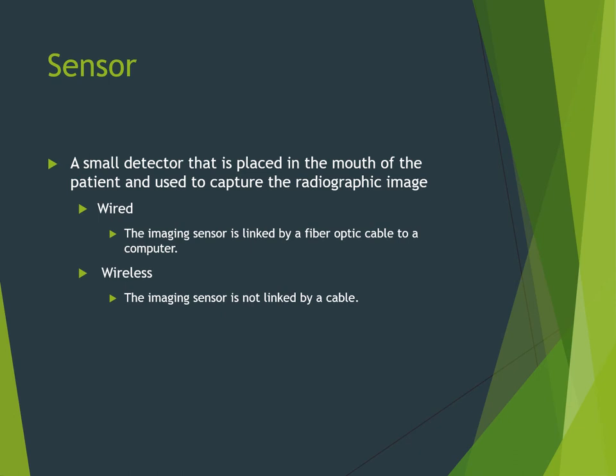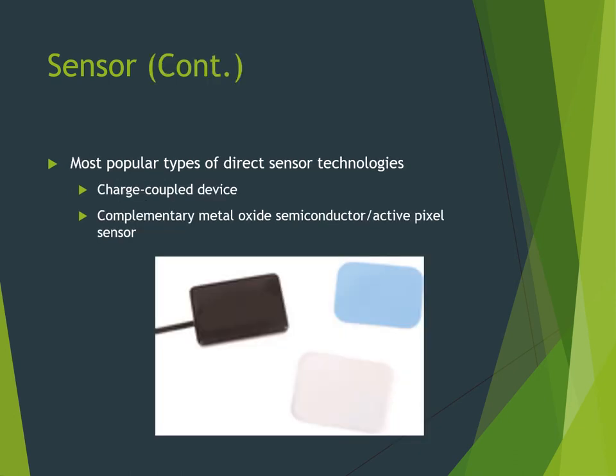All of these sensors come in sizes zero, one, two, and four — because size three is essentially worthless. The two most popular types of direct sensor technologies are the charge coupled device and the complementary metal oxide semiconductor. Both are rigid solid-state detectors made of silicon, arranged in an array of x-ray sensitive pixels.